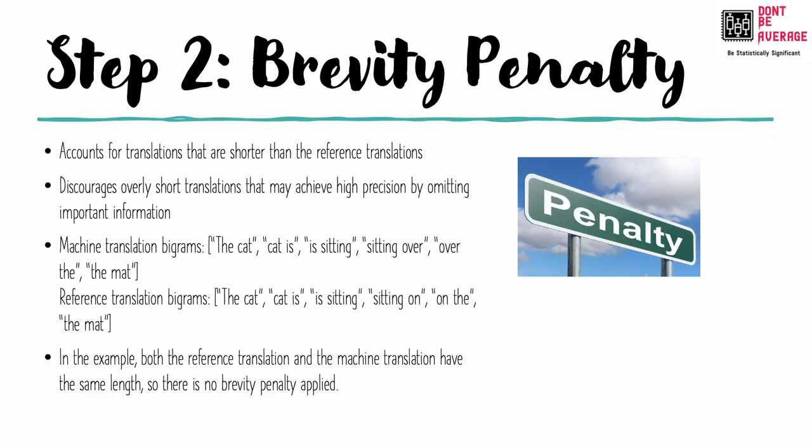Step 2 of BLEU score calculation is brevity penalty. It is applied to account for translations that are shorter than the reference translations, discouraging overly short translations that may achieve high precision by omitting important information. In this case, both the reference translation and the machine translation have the same length, so there is no brevity penalty applied.